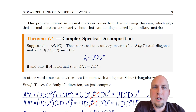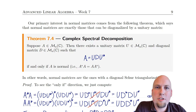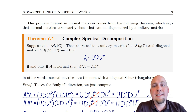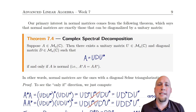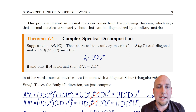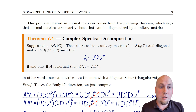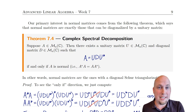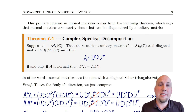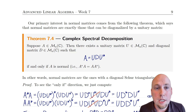Hey folks, my name is Nathan Johnston and welcome to lecture 28 of advanced linear algebra. Today we're going to go through a couple of examples of how to actually compute a complex spectral decomposition, now that we know, thanks to lecture 27, that it always exists as long as the matrix you're working with is normal.